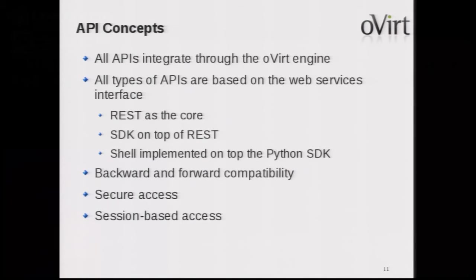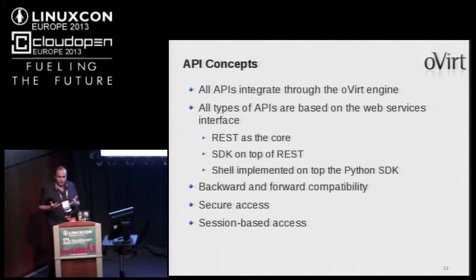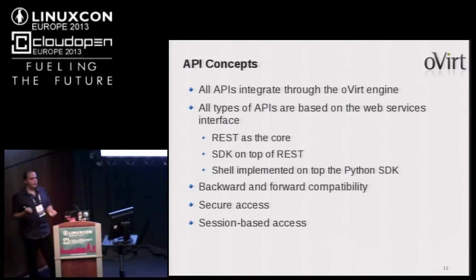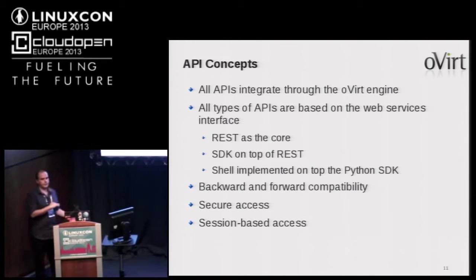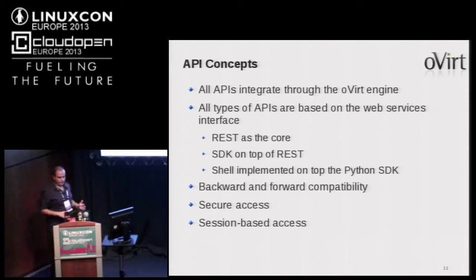All API types are integrated through the oVirt engine, based on REST as a core, with the SDK on top of it and the shell on top of that. Another important aspect is backward and forward compatibility — we try to keep the current API compatible with older versions of the oVirt engine, and to use older SDKs with newer versions. We sometimes break that, but we try to keep it as compatible as possible and if we deprecate options it takes a few versions.